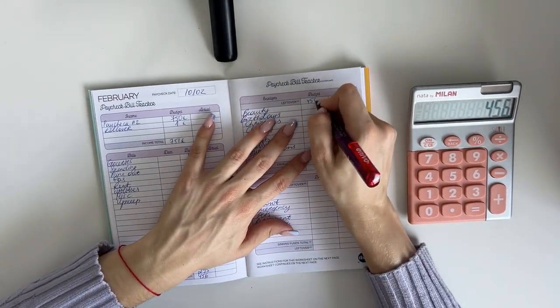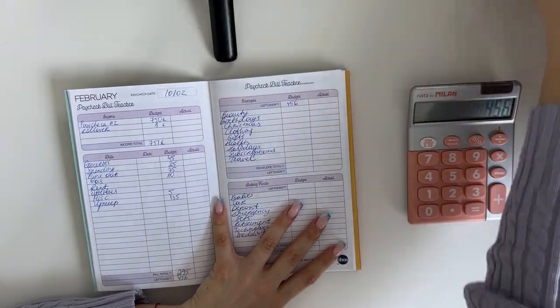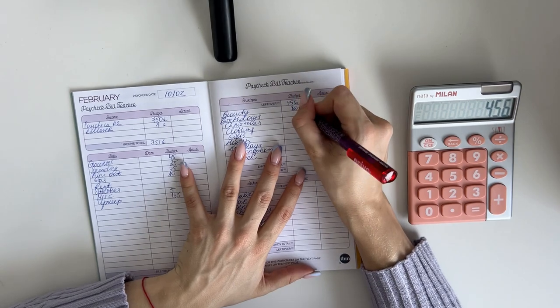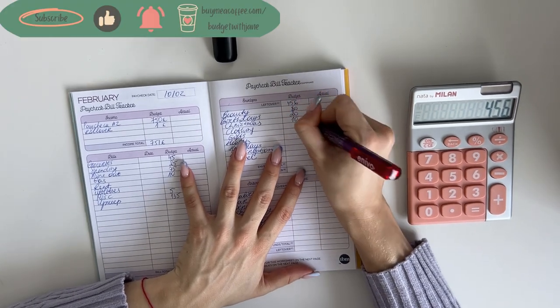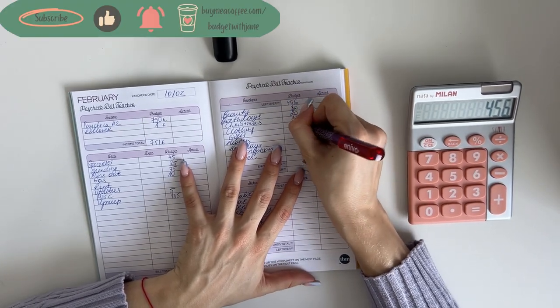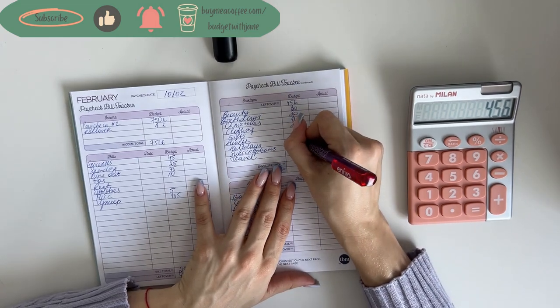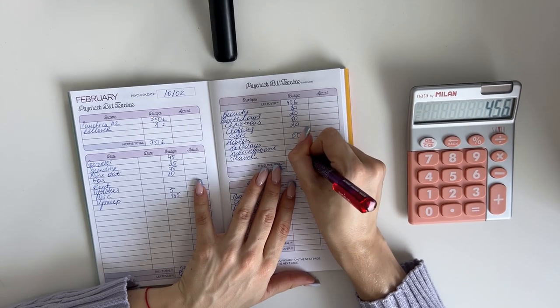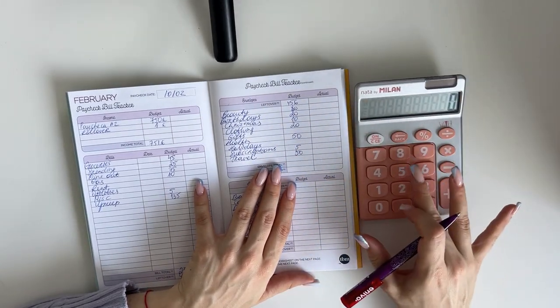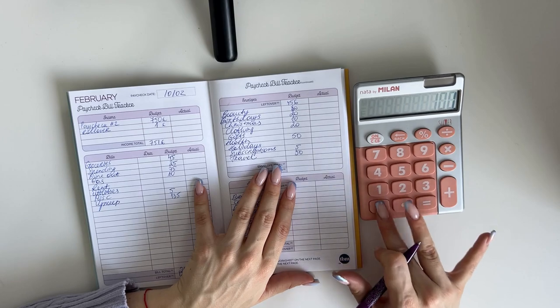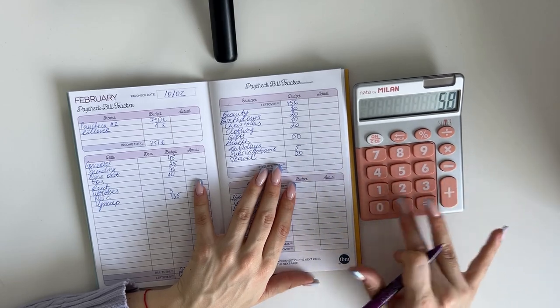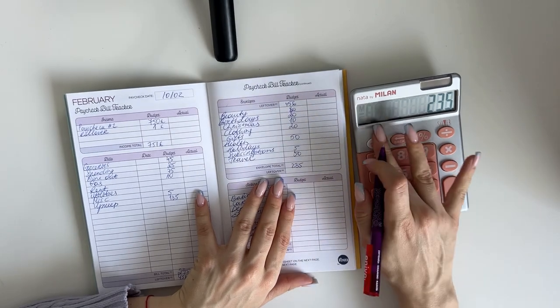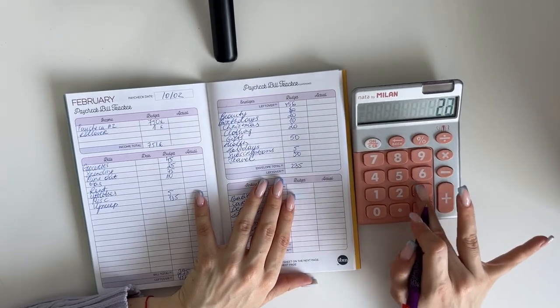So we're bringing 456 here for short-term sinking funds. Beauty is going to get 80, birthdays 20, Christmas 10, clothing 20, health 50, subscriptions 5, and travel 50. 235 in total. So 456 minus 235 is 221.